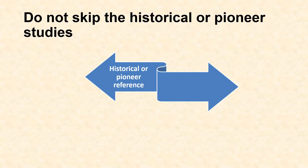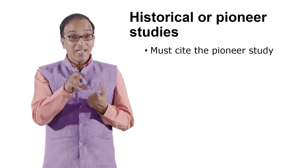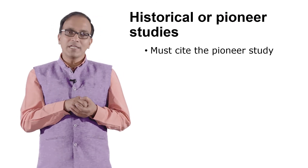Another feature is: do not skip historical or pioneer studies in your field of research. Though current literature should be cited, we must not avoid pioneer studies. For example, if I am referring to the h-index and critiquing it, I cannot skip the original paper by Hirsch from 2005. That pioneer reference must always be cited.